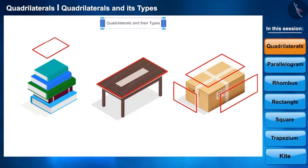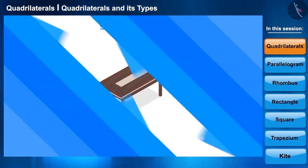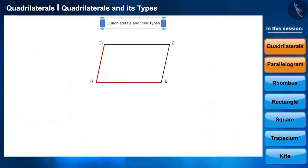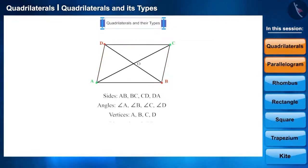Friends, a quadrilateral has four sides, four angles, and four vertices. Line segments formed by joining opposite vertices are called the diagonals, and all quadrilaterals have two diagonals. If a quadrilateral has the characteristic that its opposite sides are parallel, then these types of quadrilaterals are called parallelograms.